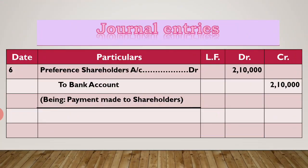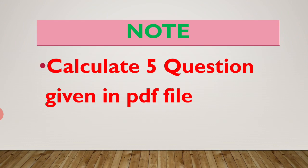Next entry, entry number 6: this is the sixth journal entry. We have passed 5 entries so far. Now the payment entry: preference shareholders account debit to bank account, 2,10,000. Being: payment made to shareholders.